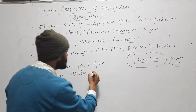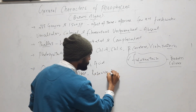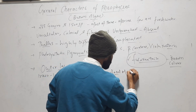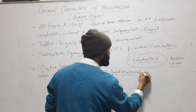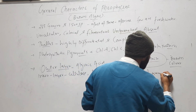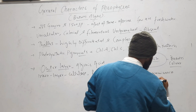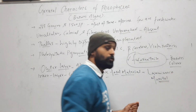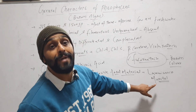The reserve food material in Phaeophyceae is laminarin and mannitol.